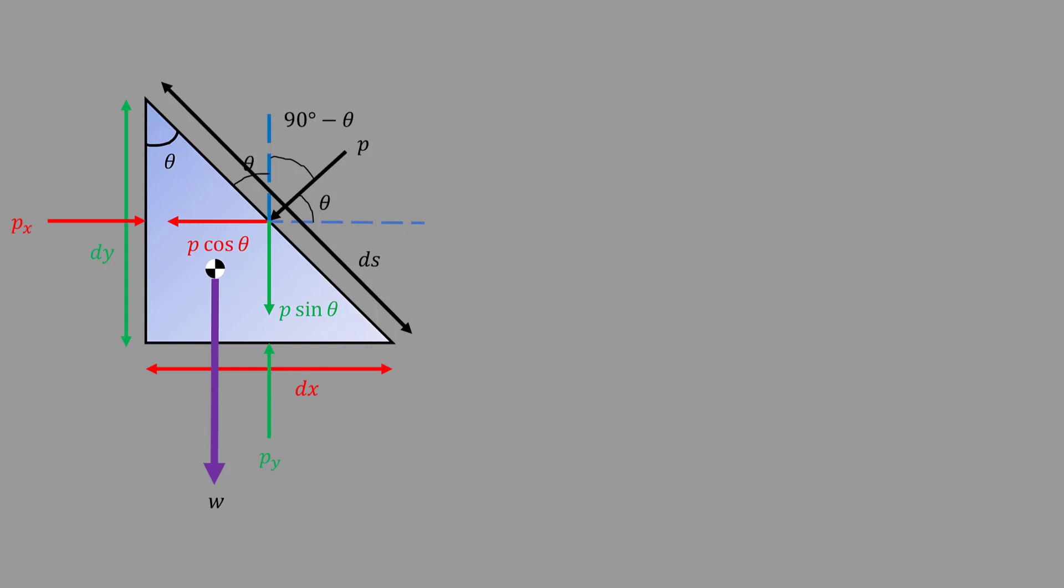At equilibrium, that is Fx equals 0, Px dy minus P cos theta ds equals 0. Since cos theta equals dy by ds,